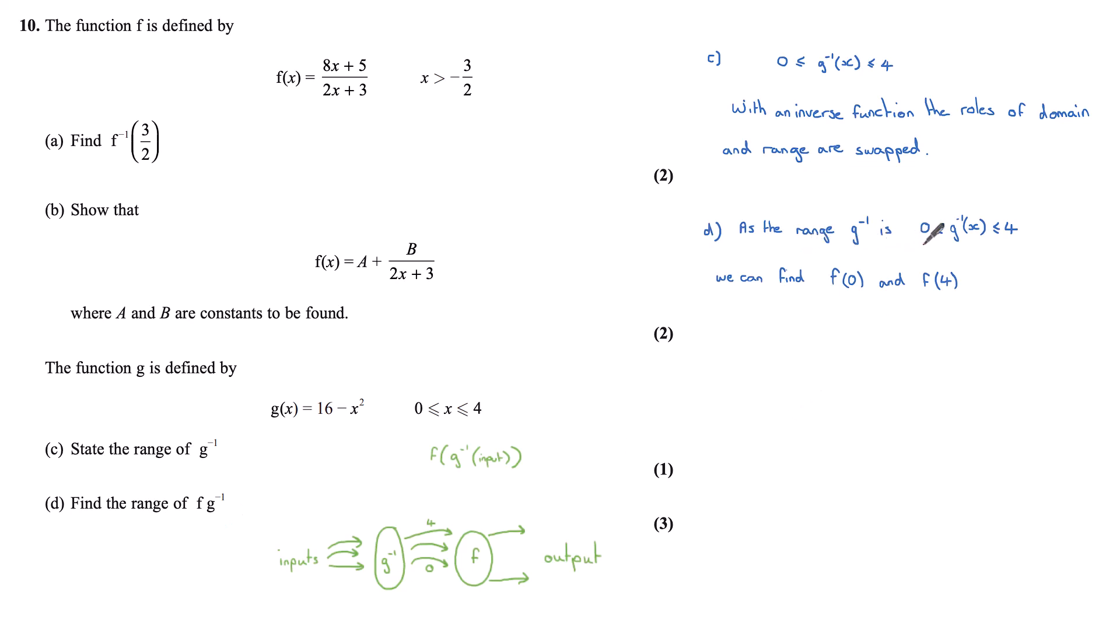So as I know the range of g^(-1) is between 0 and 4, I can find the limits in this composite function by substituting 0 and 4 into f. Putting 0 into f gives me 5/3. Putting 4 into f gives me (32 + 5)/(8 + 3), which is 37/11. That gives me a range for f∘g^(-1) of greater than or equal to 5/3 and less than or equal to 37/11.